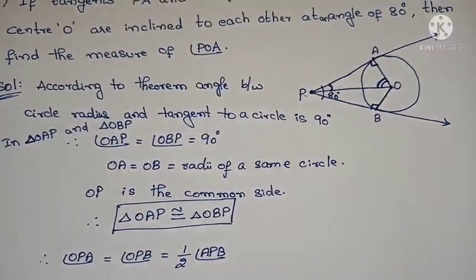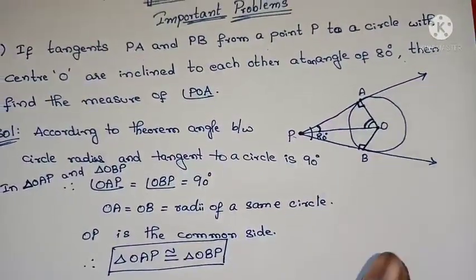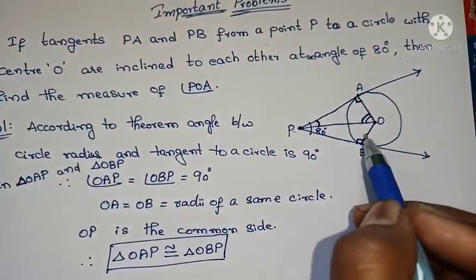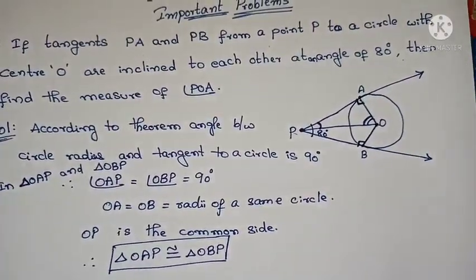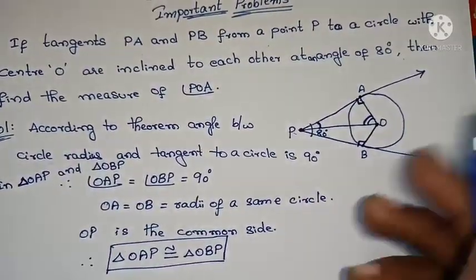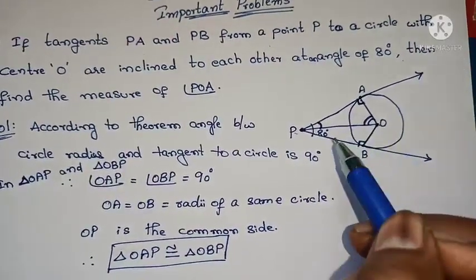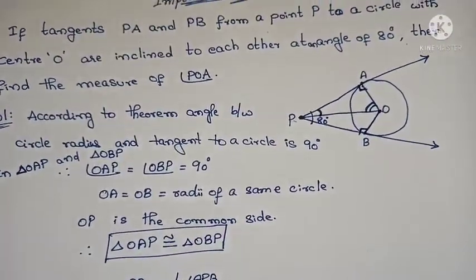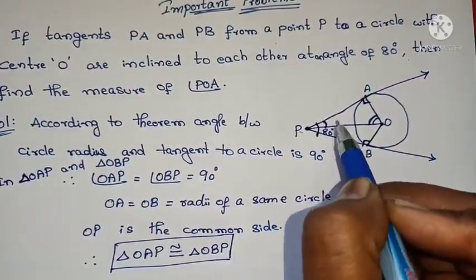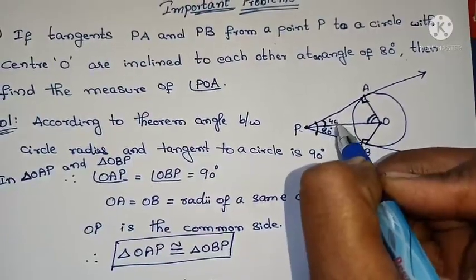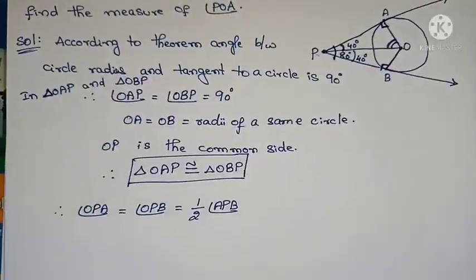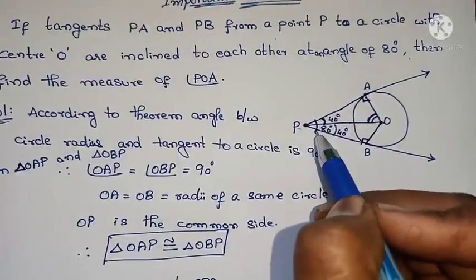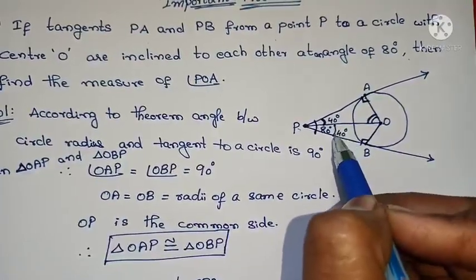In the figure, there are two tangents and the radii meet the tangents at 90 degrees each. OA equals OB (both radii), both angles are 90 degrees. Since the two triangles are congruent, the total angle APB is 80 degrees, so angle OPA equals angle OPB equals half of 80, which is 40 degrees.